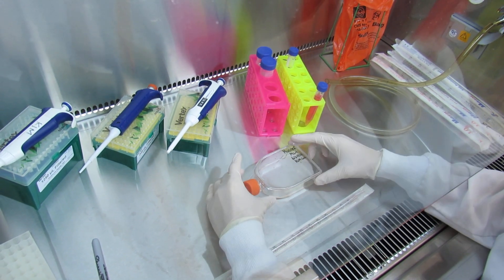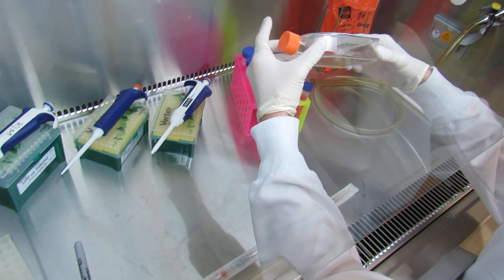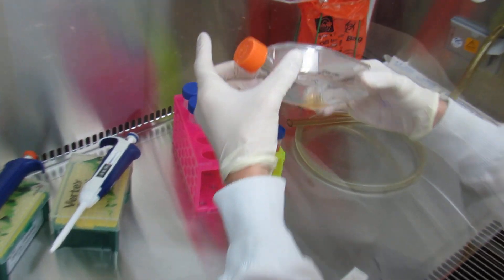After you've successfully trypsinized your cells and they have detached from the bottom of the flask, you will observe lots of gunk at the bottom of the flask. This is okay.